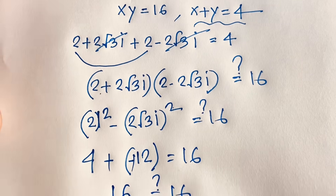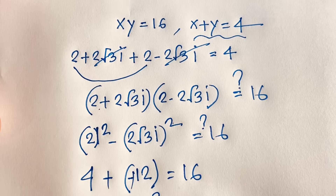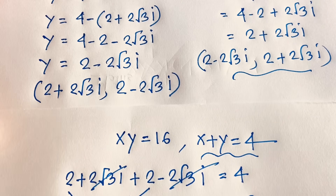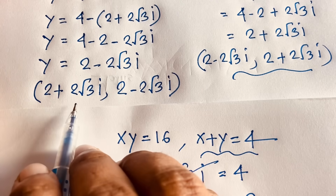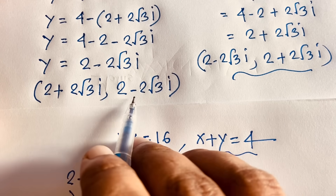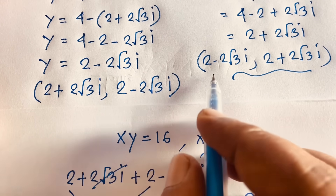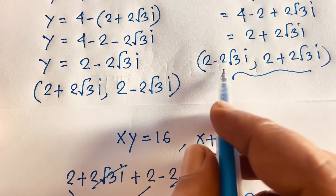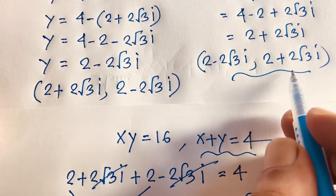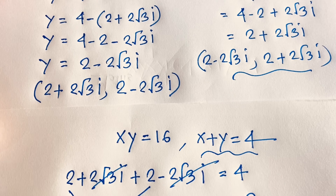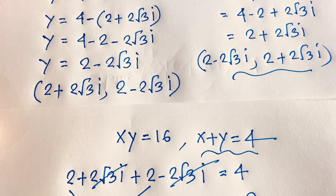Our final answer is confirmed: x equals 2 plus 2√3i and y equals 2 minus 2√3i, or x equals 2 minus 2√3i and y equals 2 plus 2√3i. Thank you all. If you enjoyed this video, please subscribe to my channel for more interesting videos. Goodbye, take care.